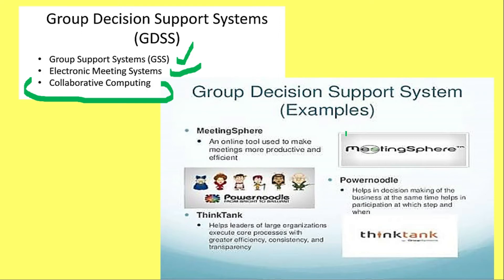Some examples of group decision support systems are shown on the screen — for instance, meetings where an online tool is used to make meetings more productive and efficient, and tools like PowerModel and ThinkTank. I would like each one of you to comment which other examples you can suggest for group decision support systems.